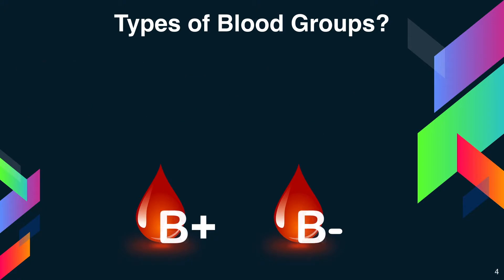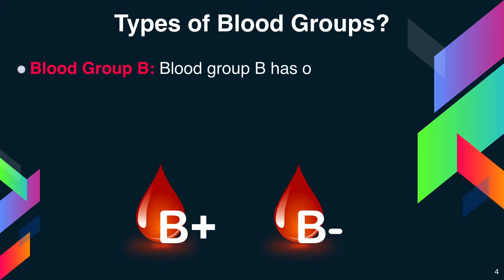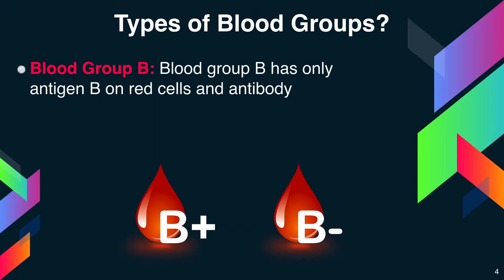Blood group B has only B antigen on red cells and antibody A in the plasma. Similarly, B is classified into B positive based on the presence of Rh factor, and B negative based on the absence of Rh factor.